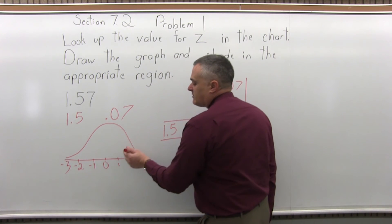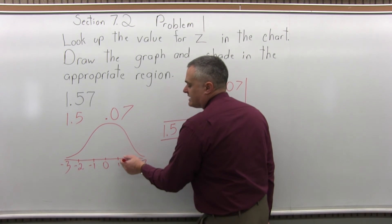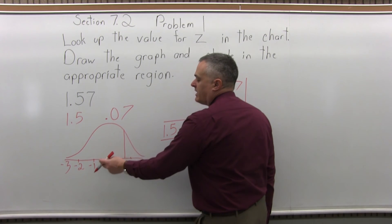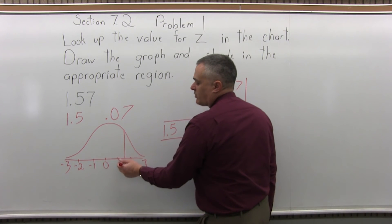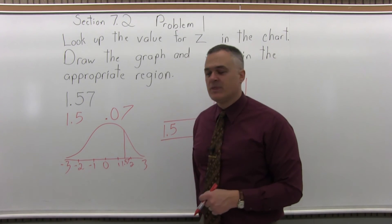So 1.57 means you're 1.57 standard deviations away from the mean, the middle value. So 1.57 is about between the 1 and the 2.